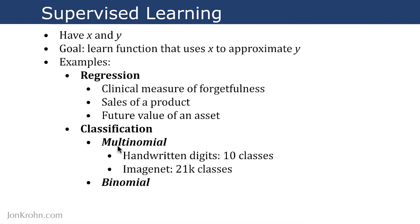So the alternative to a multinomial problem is a binomial problem, where we have only two classes that we're distinguishing between. So we can also call this a binary classification problem.